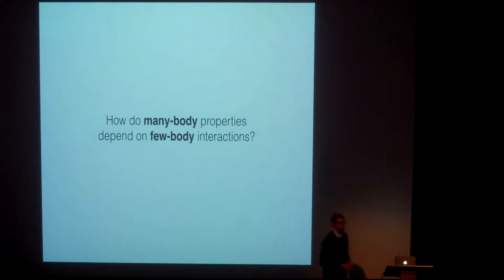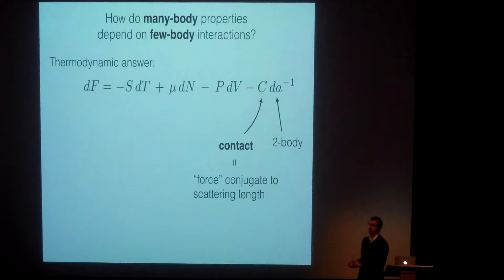So a natural question to ask then is I can tune these few-body interactions. What does the many-body do? And an interesting way to phrase that is to use the mechanism of thermodynamics and say, I now have a new knob. I can not only tune something like volume, that's a normal thermodynamic knob we have, but we can also tune now the scattering length. And just like volume has pressure as a thermodynamic conjugate, if I tune a scattering length, then what is the thermodynamic conjugate to that? And the answer is something that is called the contact. And probably very few of you have heard of the contact.